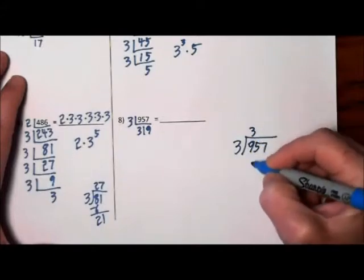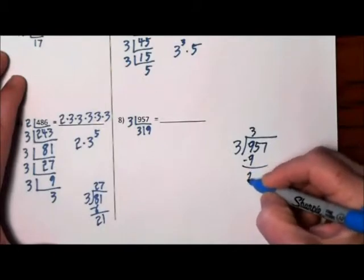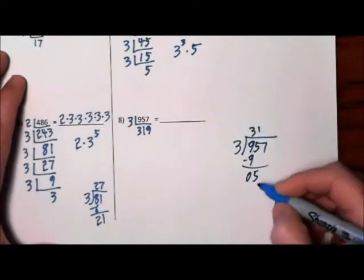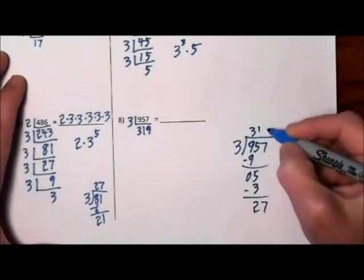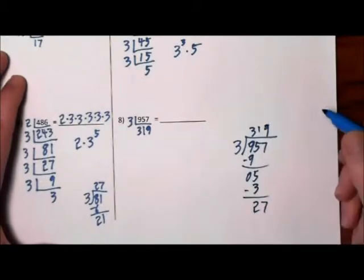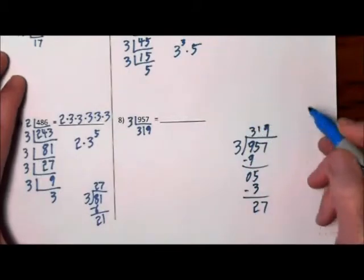957 divided by 3. It goes in once, goes in 9 times. And I could write 27 and all that, but I'm not going to bother.